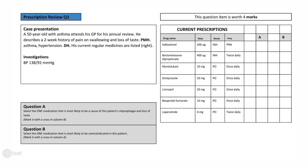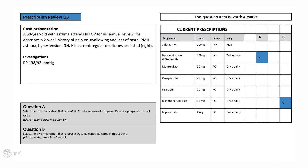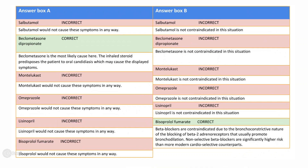Question A requires you to recognize the possible cause of odynophagia and altered taste — both of which may be caused by oral candidiasis. You must then identify that oral candidiasis may be caused by the inhaled steroid beclomethasone dipropionate, which he is on for his asthma. The other medications would not cause these symptoms. Question B assesses your knowledge of contraindicated medications in asthma. Bisoprolol fumarate is contraindicated here due to the bronchoconstrictive nature of blocking beta-2 adrenoreceptors, which usually promote bronchodilation. Non-selective beta blockers carry significantly higher risk than more cardioselective counterparts.